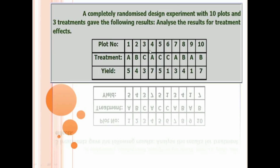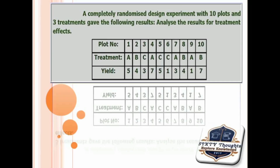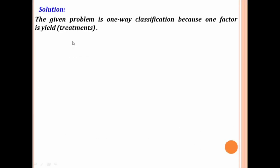How to identify the given problem? From the given statement, we are going to analyze only the treatment effect. Therefore, the only one factor is treatment effect. Therefore, it is called one-way classification of ANOVA test, also called ANOVA 1. Solution: the given problem is one-way classification because one factor is yield.